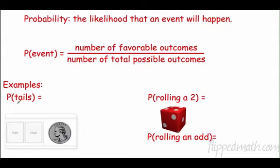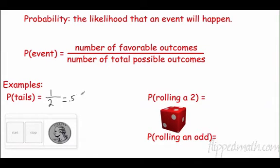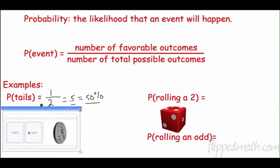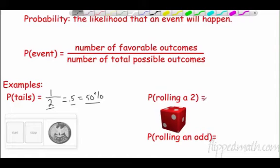If I flip a coin and want it to come up tails, the number of favorable outcomes is one — tails — out of two possible outcomes, giving us one half. I could express that as a decimal or a percent. All three forms work. There's a 50% chance — and it landed on tails!